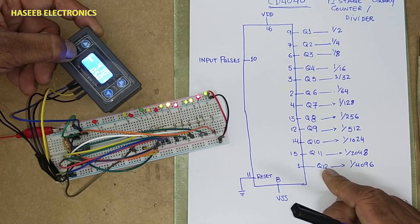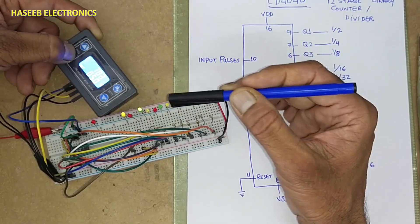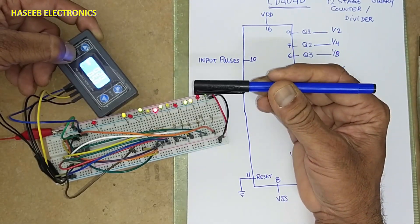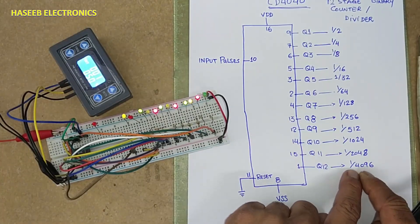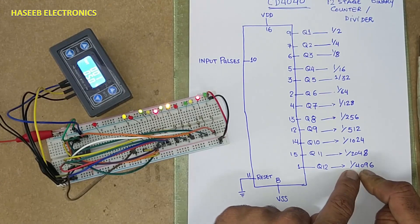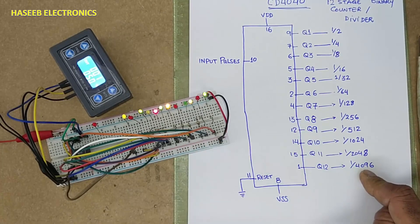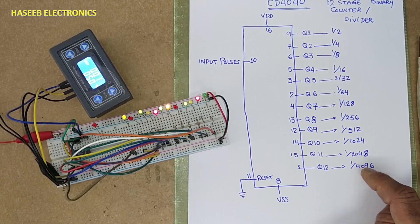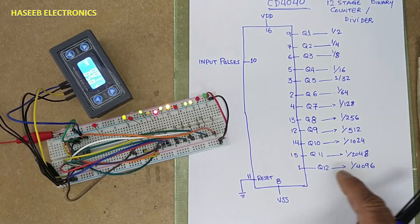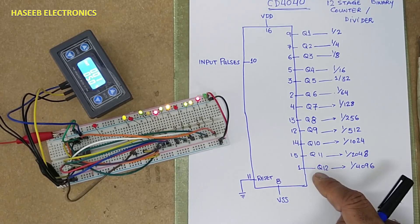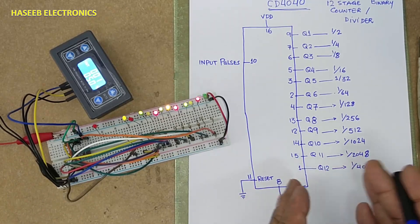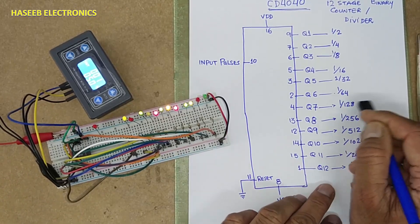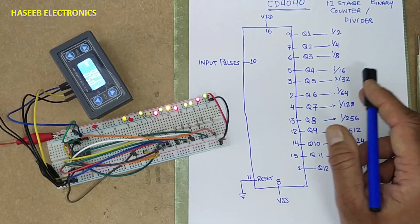If we want to create a delay time. If I provide 1 hertz signal here. After this number of seconds, it will shift to the next stage. After 4096 pulses, it will change this state. So it will create a very huge delay time. Any output we can use for our project.